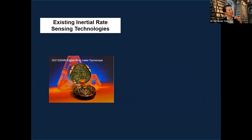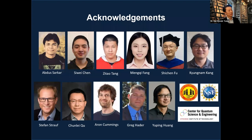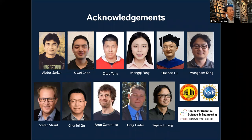Existing inertial rate sensing technology such as hemisphere resonator gyroscopes are bulky, fragile, expensive, and limited in application to submarines and airplanes. What if instead we have high-G survival, low cost, extremely small, flexible, chip-scale technology using electrons? In the future, these gyroscope technologies could be used for soldiers — placed in boots and helmets — UAVs, and many other applications. The presenter acknowledges students, postdocs, and collaborators including Professors Trow, Chu, Cummings, Mr. Hayter, and Yuping Huang, director of the Center for Quantum Science and Engineering.